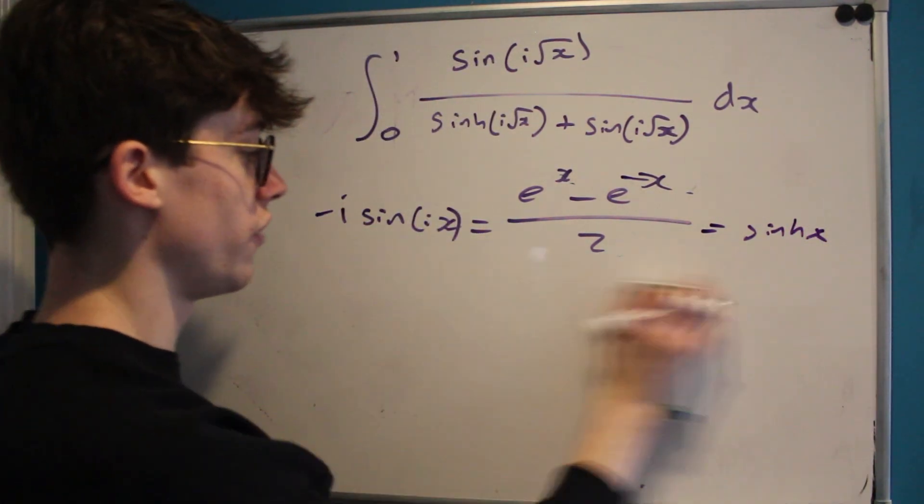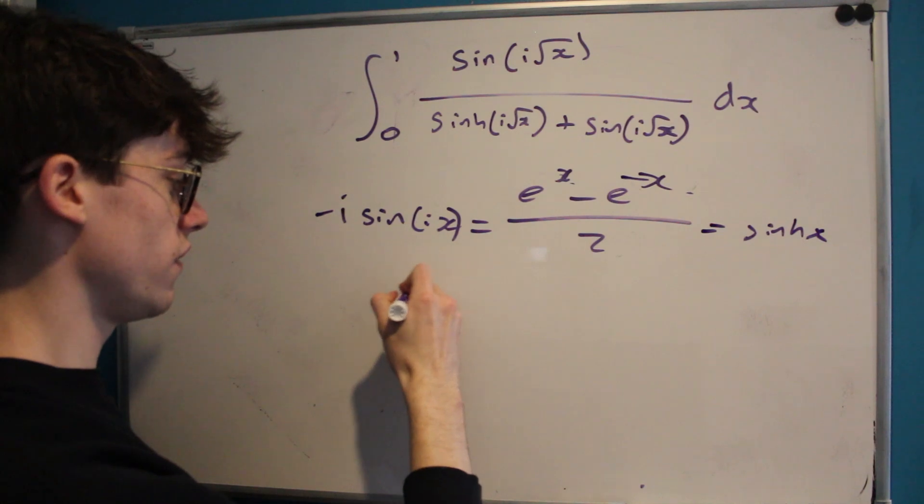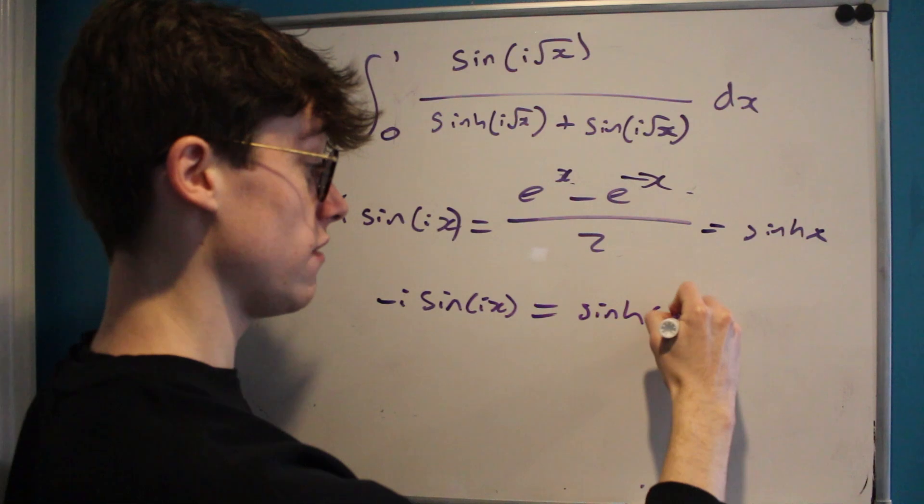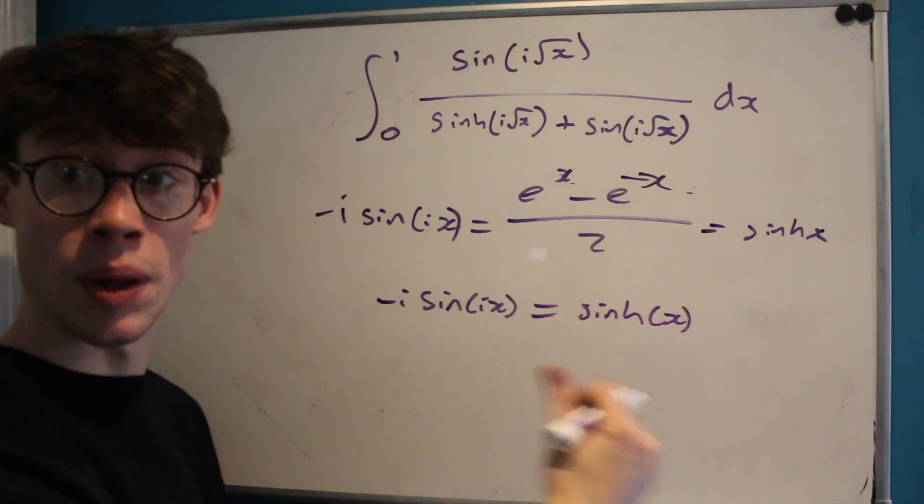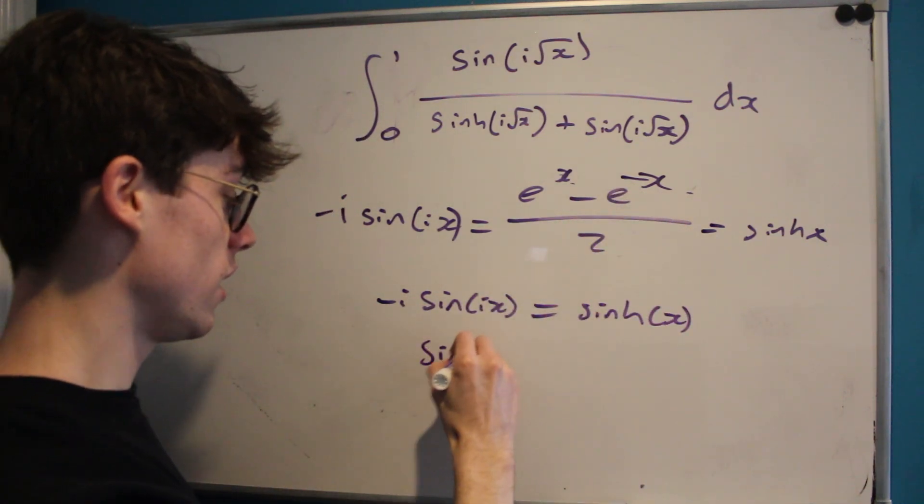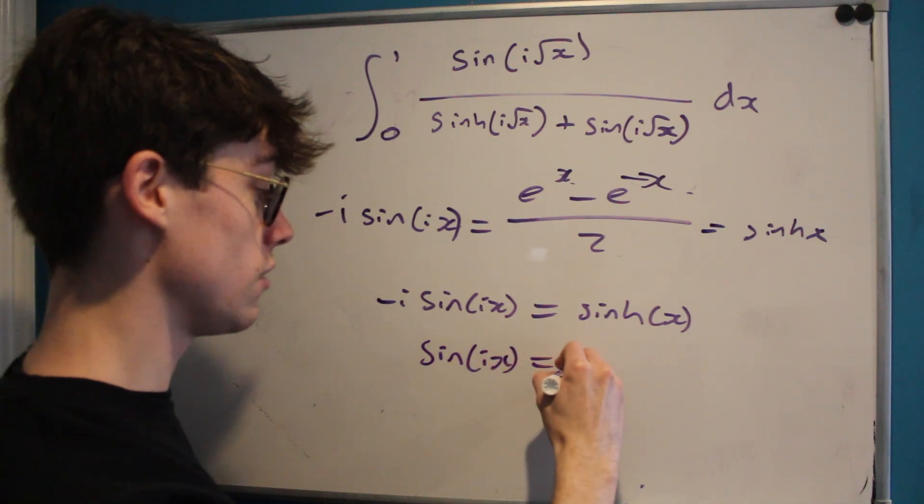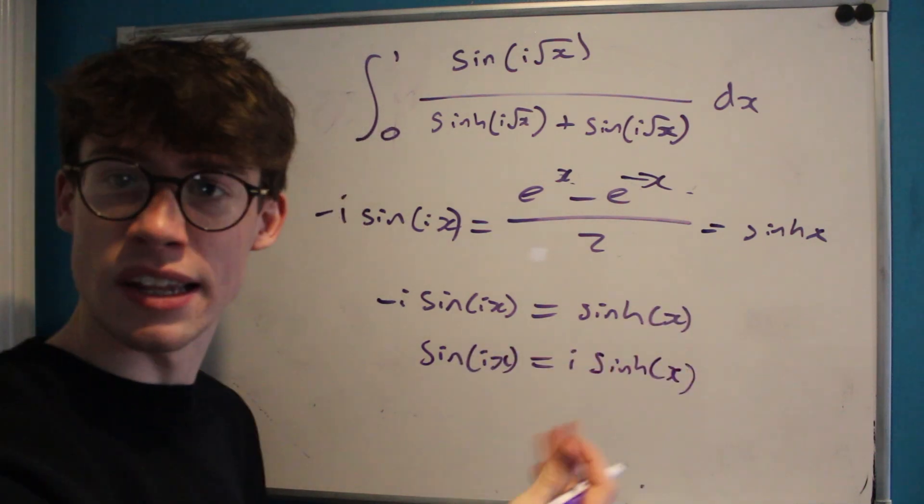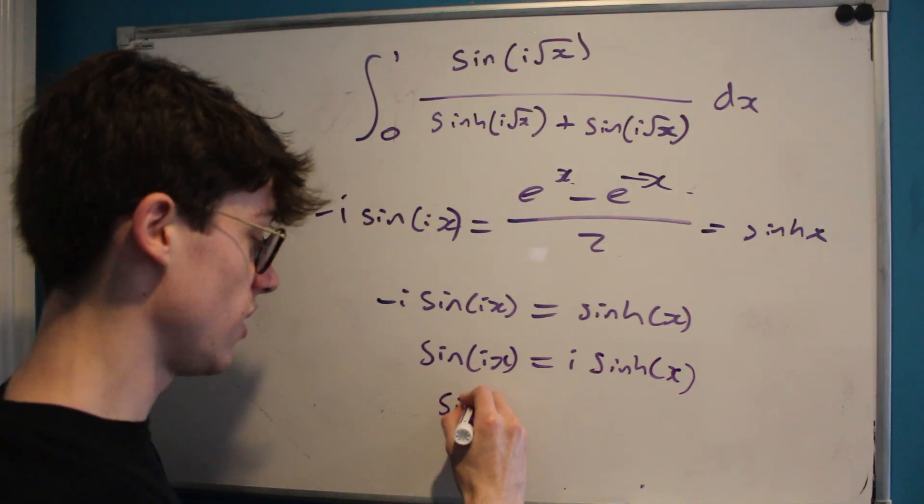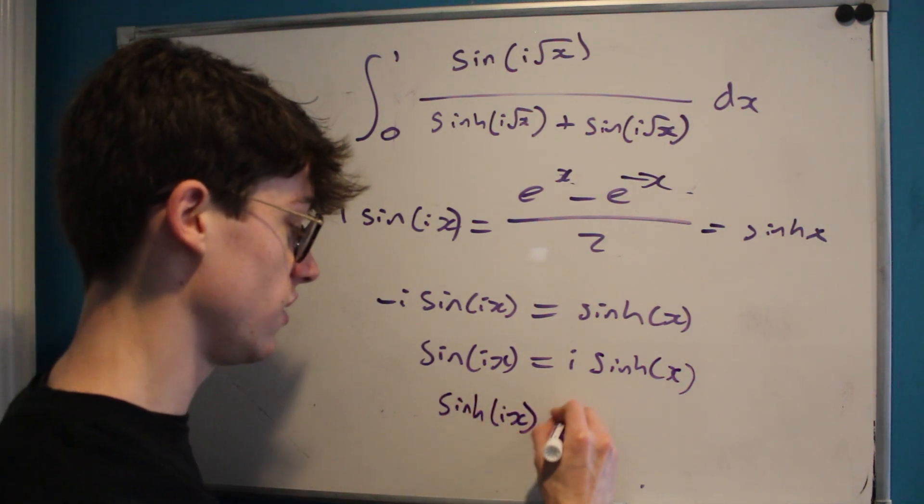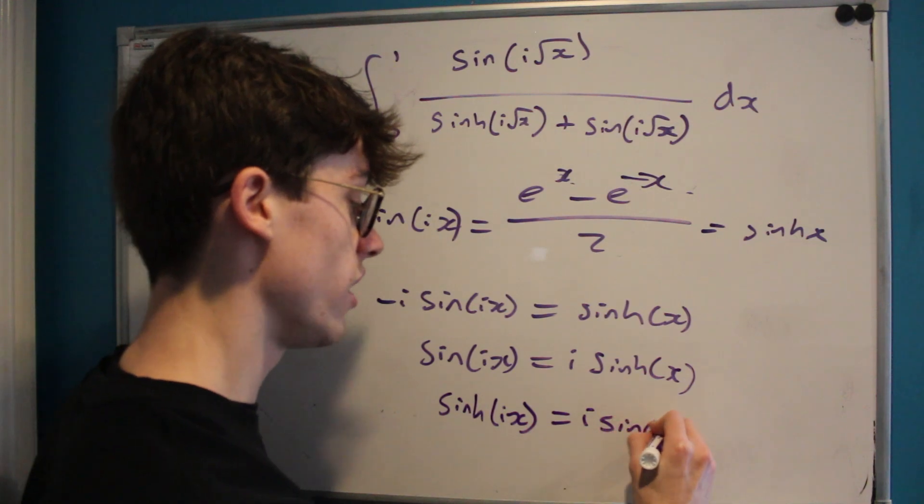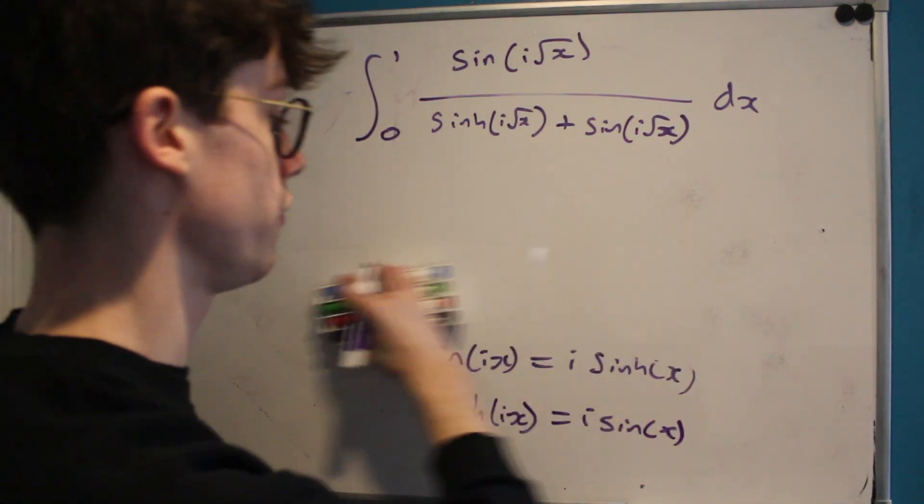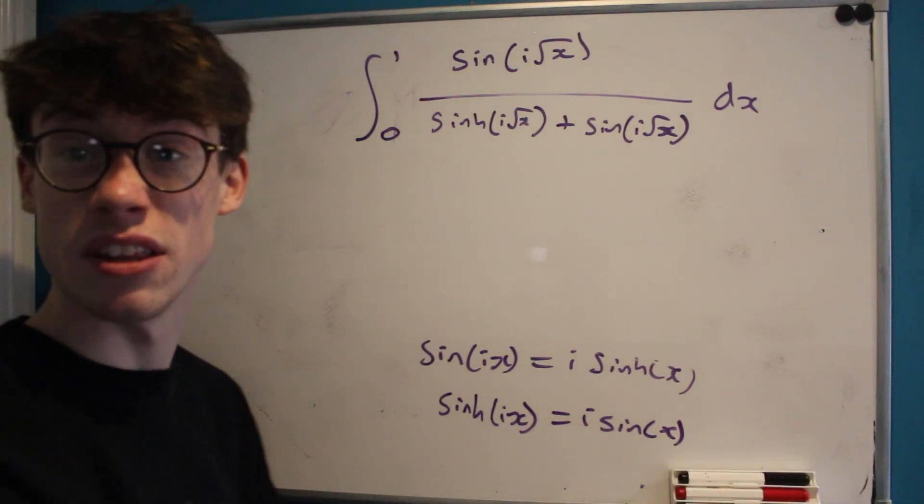So that's our first identity - it's that negative i sine i x equals sinh x, or this can be even more nicely expressed if we multiply by i on both sides as saying that sine of i x equals i of sinh x. And similarly there's another identity that says the same but the opposite - that sinh of i x is equal to i of sin x. I'm not going to verify that now, but that's something you can nicely verify for yourself, it's essentially the exact same method as what we just did.